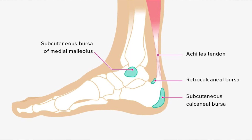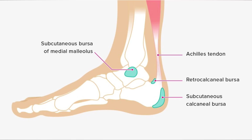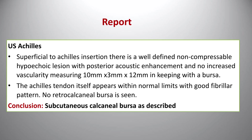There are two main bursae around the Achilles tendon. The most commonly known is the retrocalcaneal bursa, which sits deep underneath. But there is also a subcutaneous calcaneal bursa more superficial to the Achilles tendon. This lesion sits on top, corresponding to the area of the patient's symptoms. The report conclusion is subcutaneous calcaneal bursa — with posterior acoustic enhancement consistent with a cystic lesion — not a pathology of the tendon itself, more a superficial issue, unlikely to respond to loading or other tendon-directed interventions.